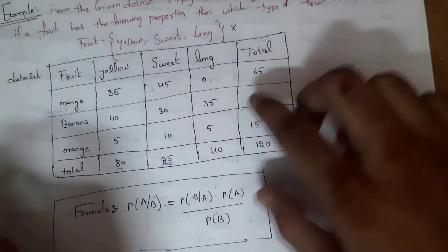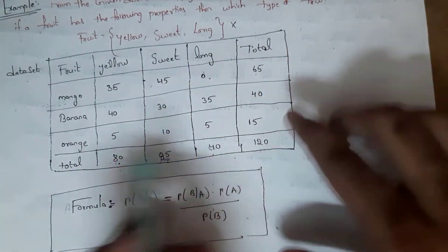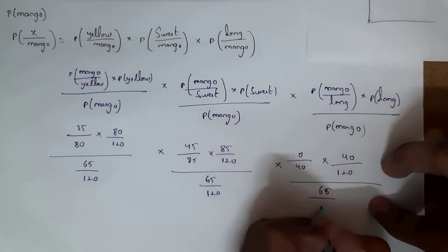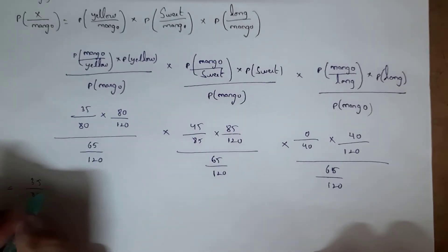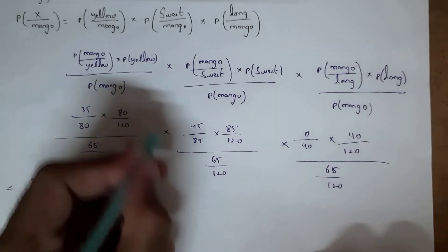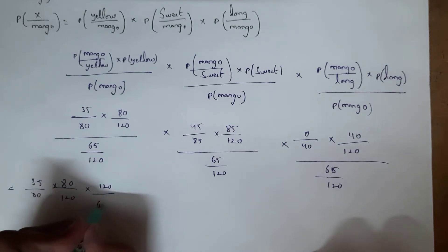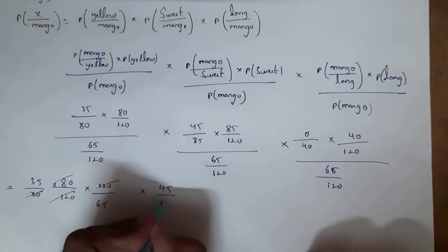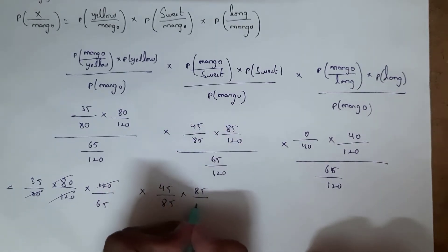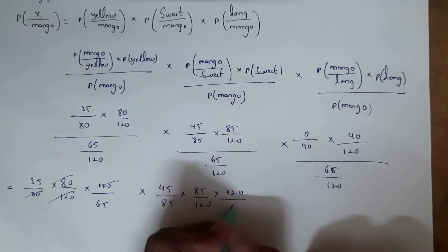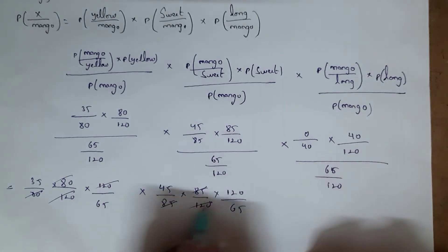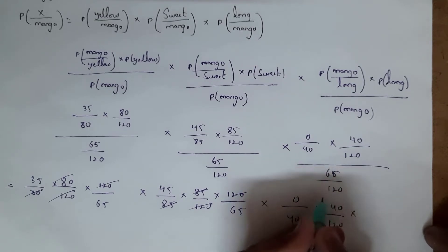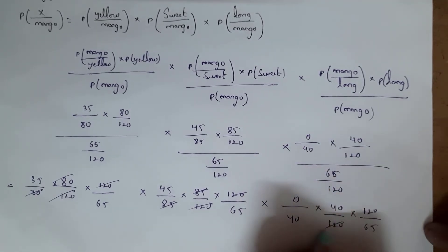Simplifying by cancellation: 80 and 80 cancel, 120 and 120 cancel, 85 and 85 cancel, 120 and 120 cancel, 40 and 40 cancel, 120 and 120 cancel. This gives us 35/65 × 45/65 × 0/65. Since the long count for mango is 0, the probability of mango is 0.